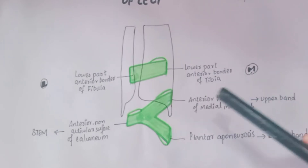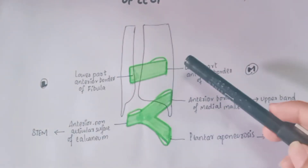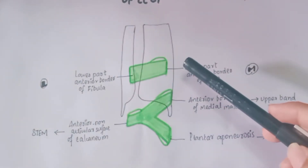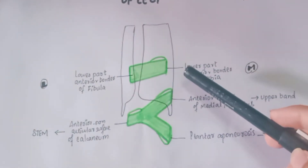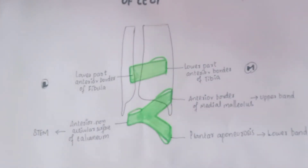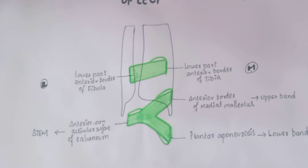The superior extensor retinacula is in the form of a rectangular band, while the inferior extensor retinacula is Y-shaped.